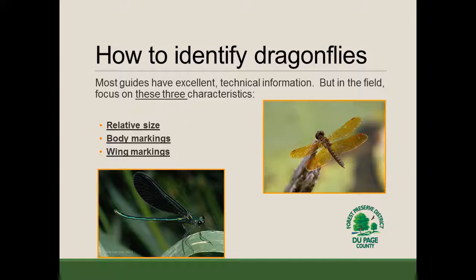The first characteristic is relative size — just ask yourself, was it very big, very small, or medium-sized? Then also look at body markings: did it have any kind of coloration or markings on the body? Was it yellow, shiny, or did it have spots? Finally, you also want to look at wing markings: did it have any color on the wings, and if so, what? If you can focus on these three aspects, you'll definitely be able to narrow down what you were looking at.